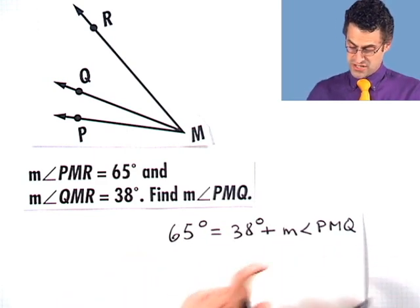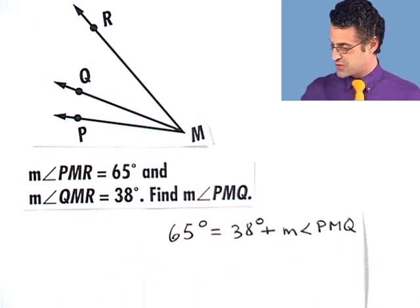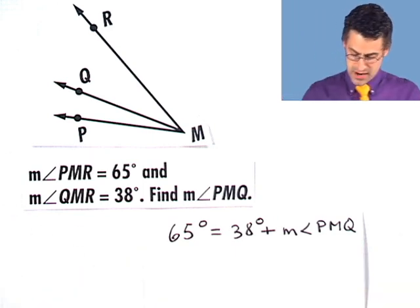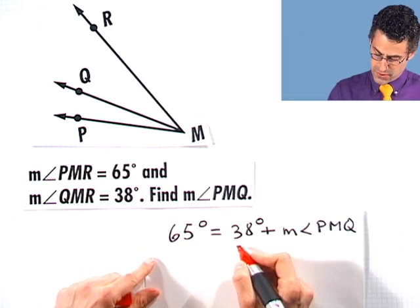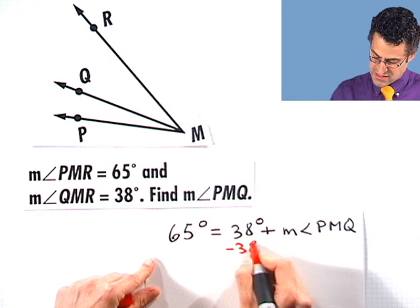Well, now this is an equation just in terms of the measure of angle PMQ, and I can solve for it by undoing the addition of 38 degrees by subtracting 38 degrees from both sides.